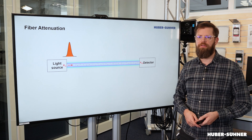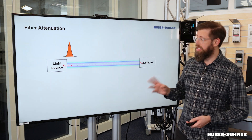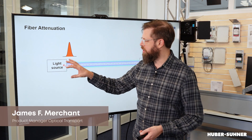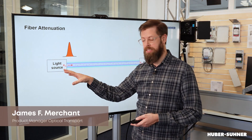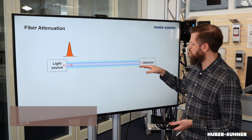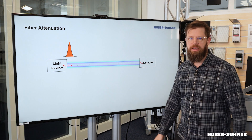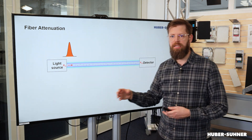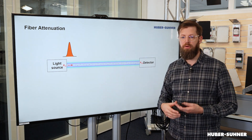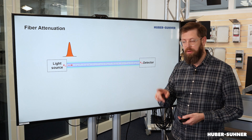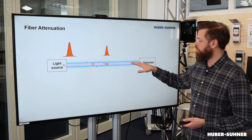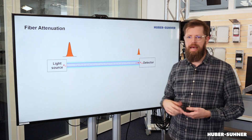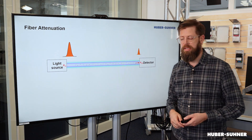To understand where the attenuation of a fiber cable actually comes from, let's first have a look at this very simplistic setup. On one side we've got the light source — in other words, the laser — that emits light which passes through the fiber cable, and on the other side we have the receiver. The amplitude of the signal at the laser itself is as big as it gets, but as the signal travels through the fiber cable, something happens that leads to this amplitude continuously decreasing.